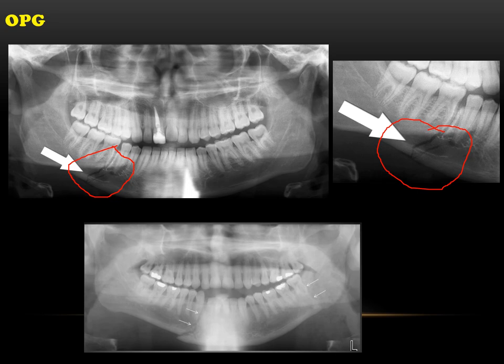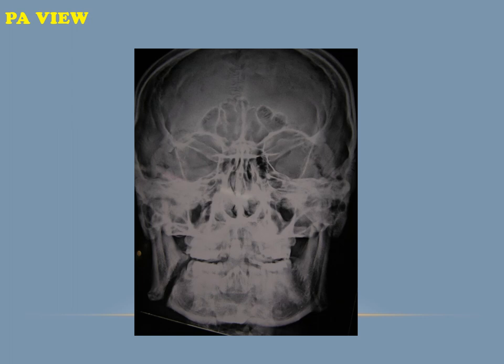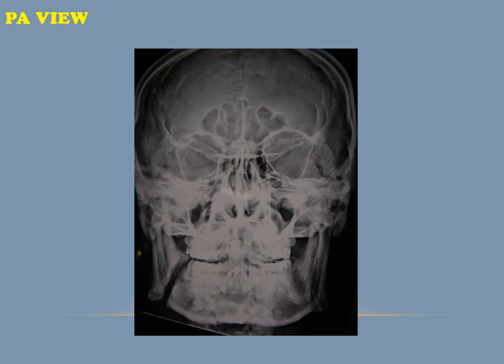On a postero-anterior (PA) view, an angle fracture on the right side of the mandible can be identified. CT scans provide coronal, sagittal, and axial views. The axial view shows an undisplaced body fracture. The coronal view shows the condylar processes that have been fractured and displaced medially.